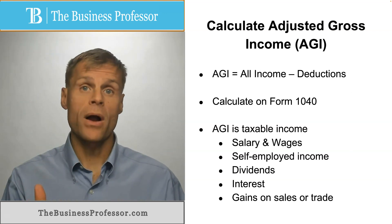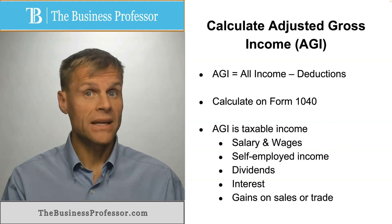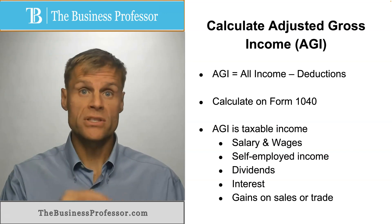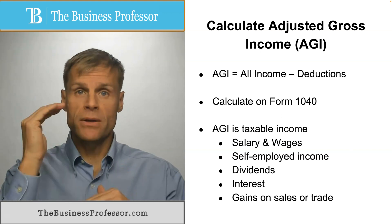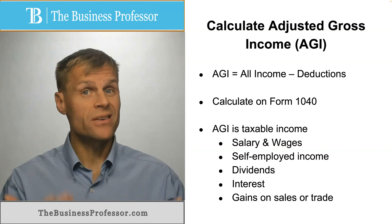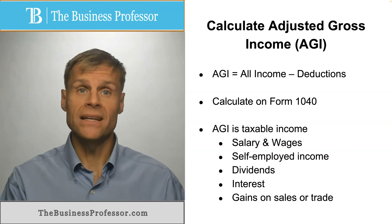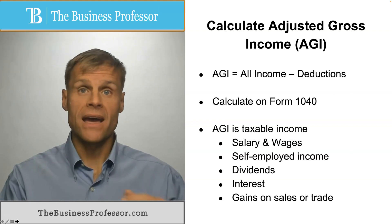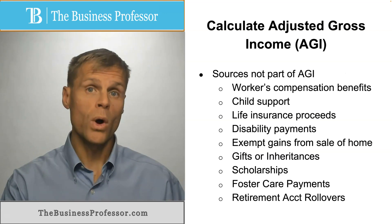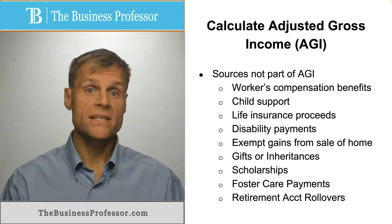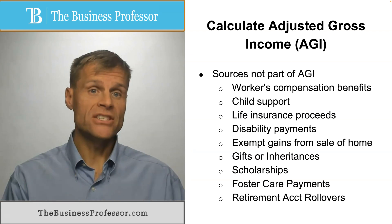Gains on the sale of property — when you sell any real or personal property for more than you purchased it for, the difference between what you sell it for and what you purchased it for is your gain. This would go into your income tax calculation for AGI.